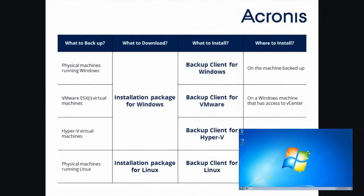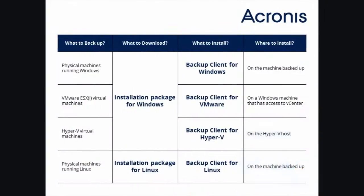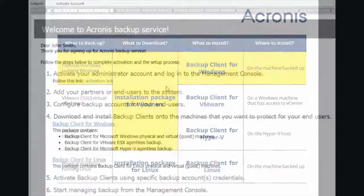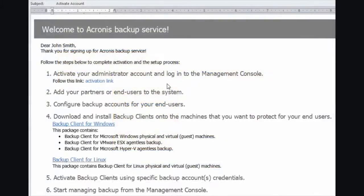Here's a quick summary to help choose the proper installation package and make the necessary preparations before installation. Before you start the installation process itself, you will need to download the Acronis Backup Client installation package for Windows to the machine you plan to backup. The link for the installation package comes together with the activation link for the new administrator, backup account, or group in the email message similar to this.